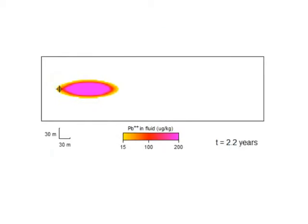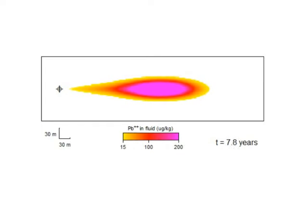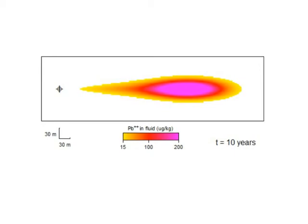The leading edge is attenuated as solute diffuses into the stagnant zones. As clean water recharges the aquifer, the stagnant zones leach solute into the free-flowing zone, creating the tailing effect.